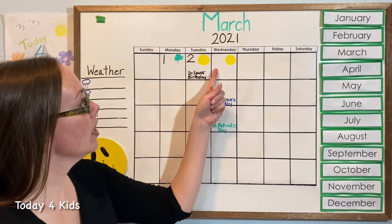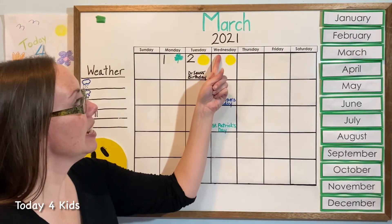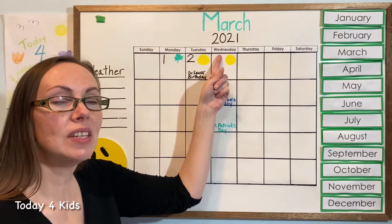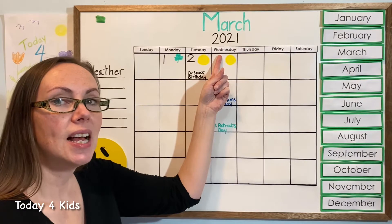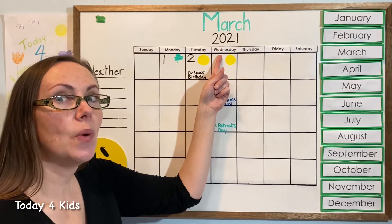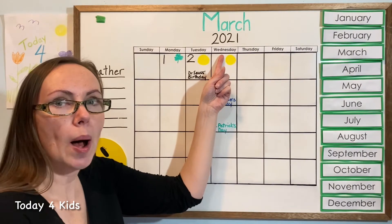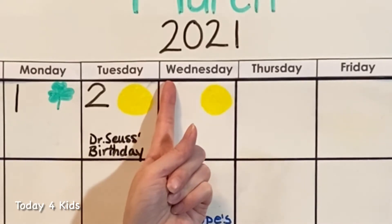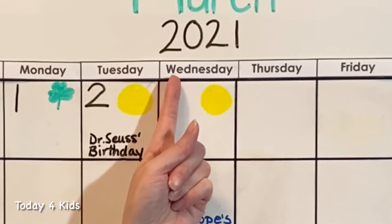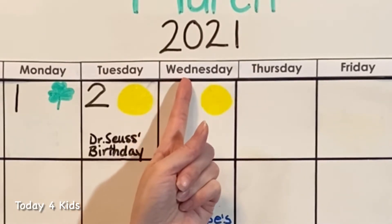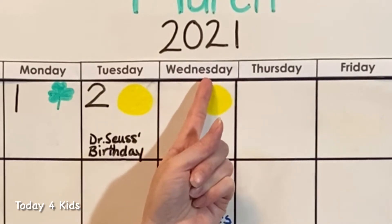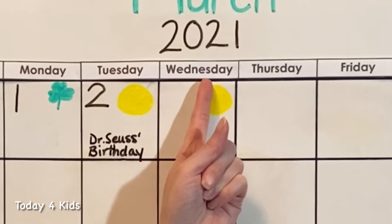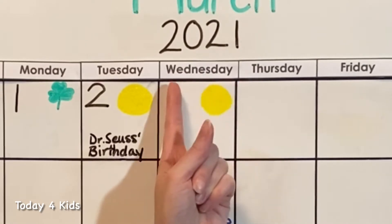So if we go back to our square and go up to today — today is Wednesday, and it starts with a W. And W sounds like w, w, w, like wet or wobbly. W. So it starts with a capital W because it's the name of our day. W-E-D-N-E-S-D-A-Y. Wed-ness-day. Wednesday.